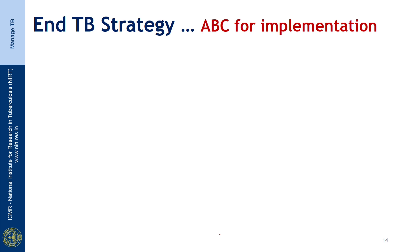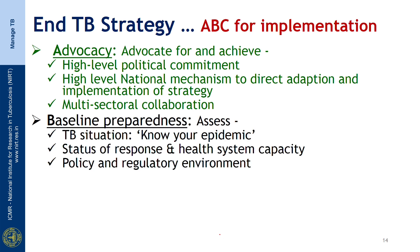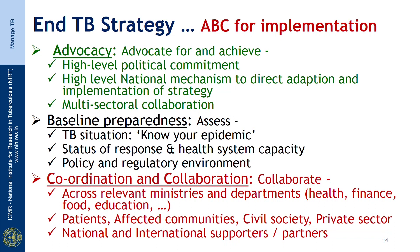When implementing the End TB Strategy, the key implementation activities can be described as ABC: advocacy, baseline preparedness, and coordination and collaboration with other stakeholders, which are needed for effective TB control measures. With regard to advocacy, we need to advocate for a high level of political commitment and a high-level national mechanism to direct adaptation and implementation of the End TB Strategy, along with multisectoral collaboration. Baseline preparedness involves assessing the TB situation — knowing your epidemic, status of response, health system capacity, and the policy and regulatory environment.